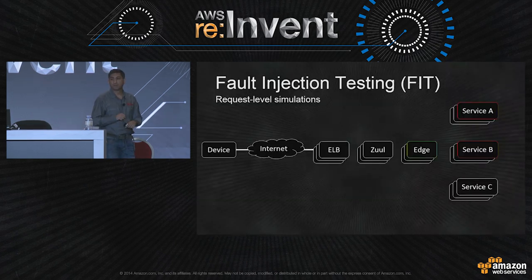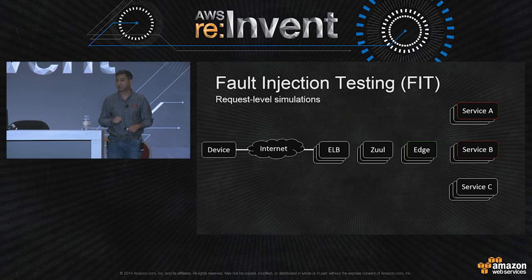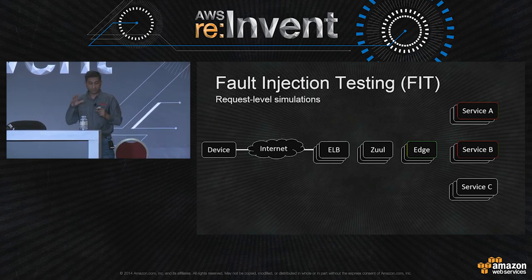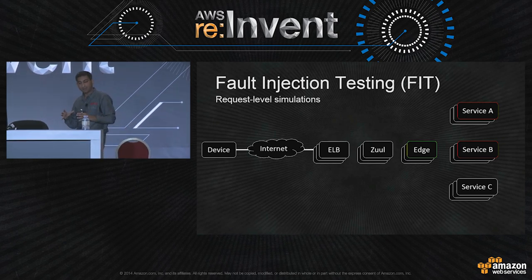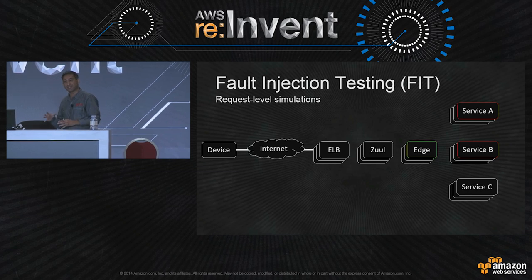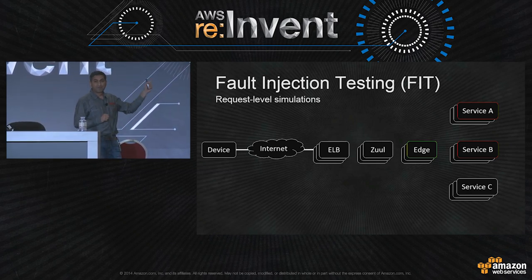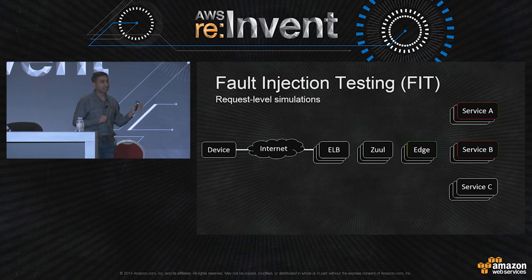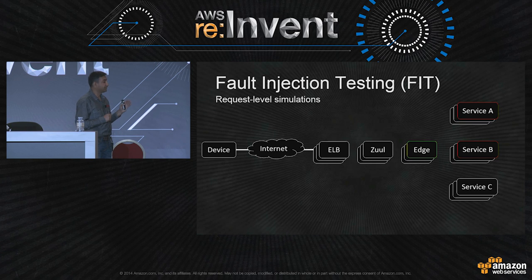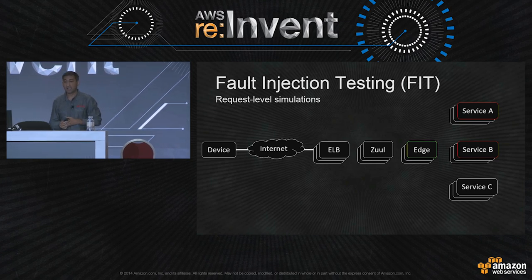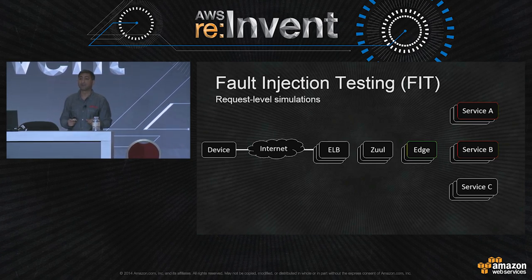So it was an aha moment for us. It was a big hammer — we were trying to slice an apple with a chainsaw. Don't try that at home, by the way. We needed a very precise way of injecting failures, at the request level. And we created FIT — our request-level precise failure injection system.